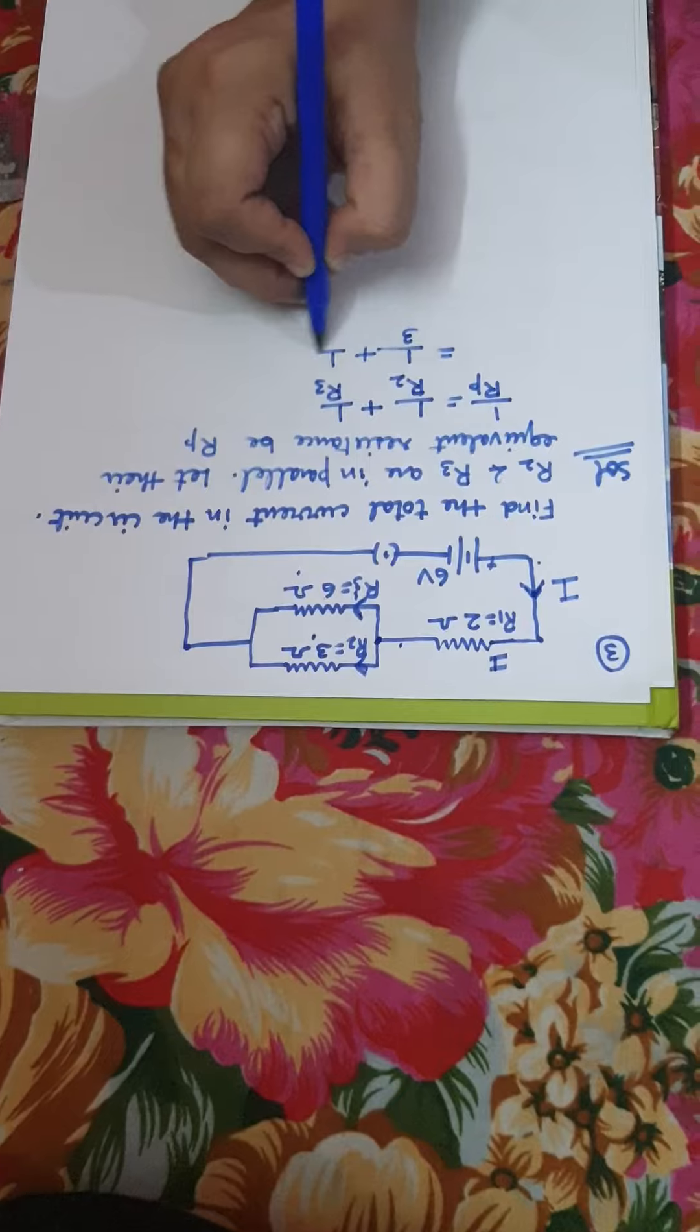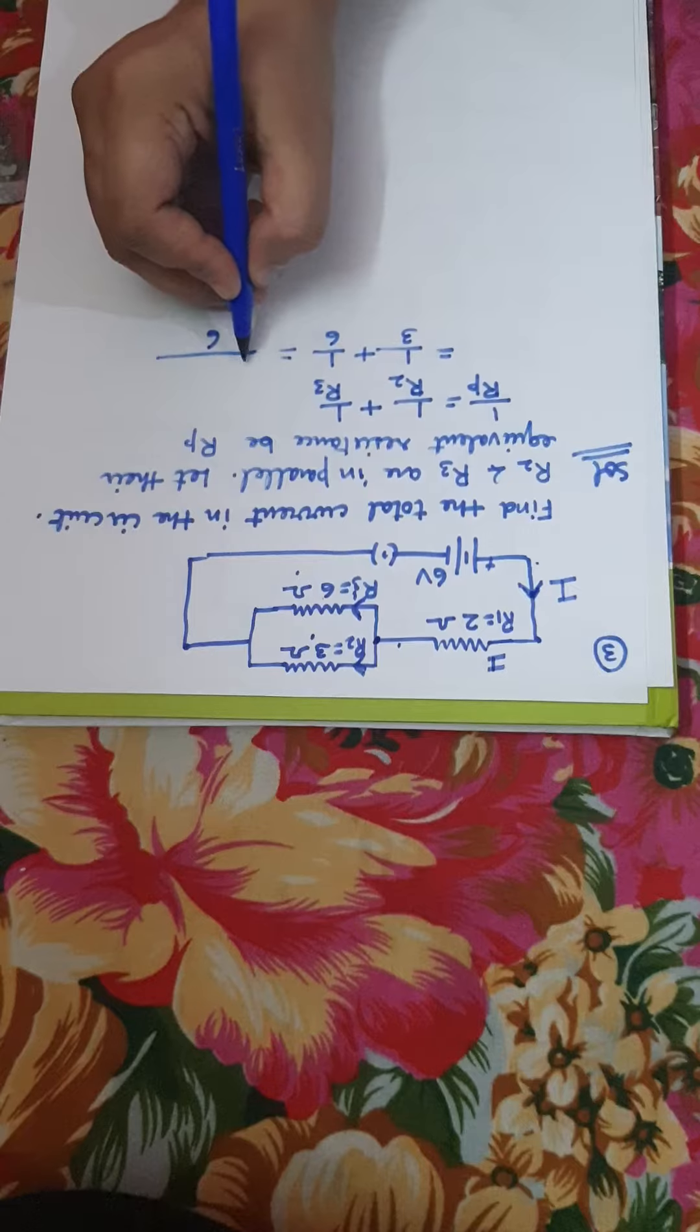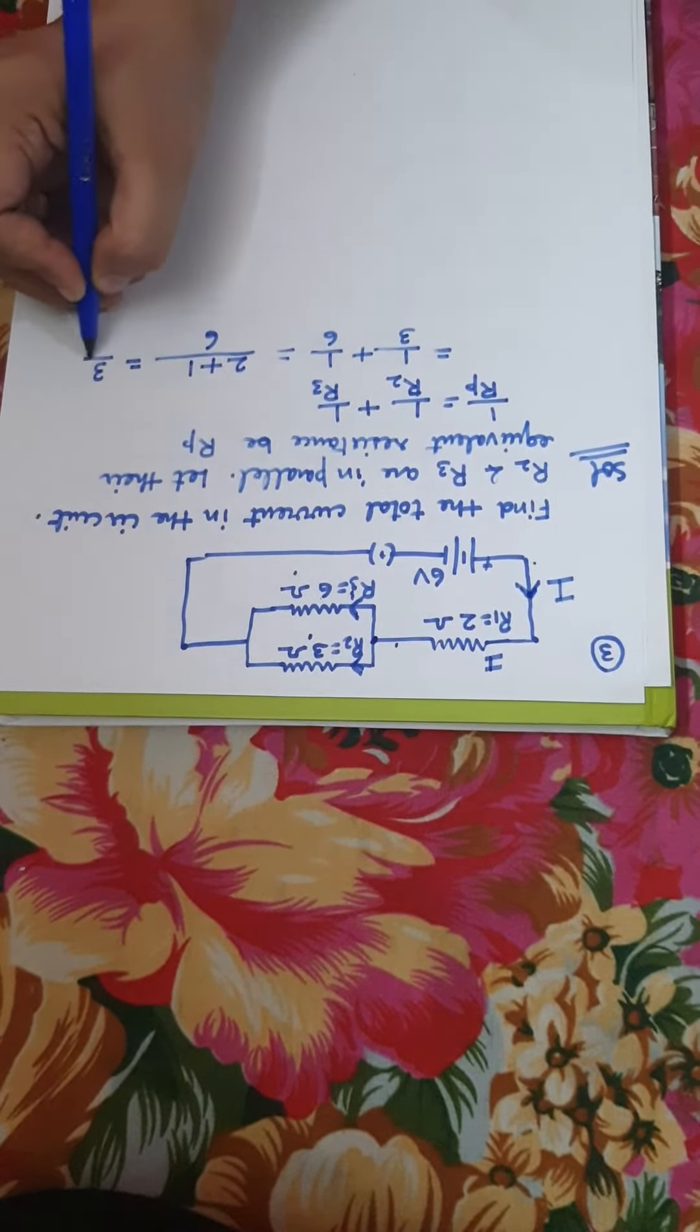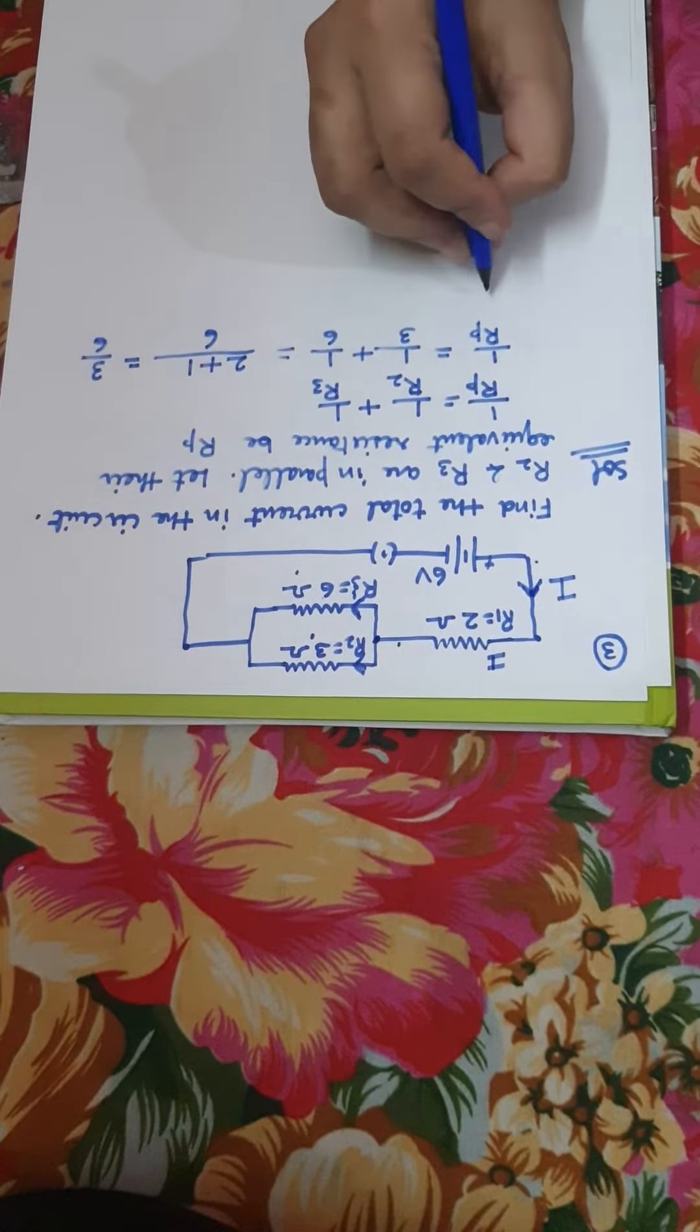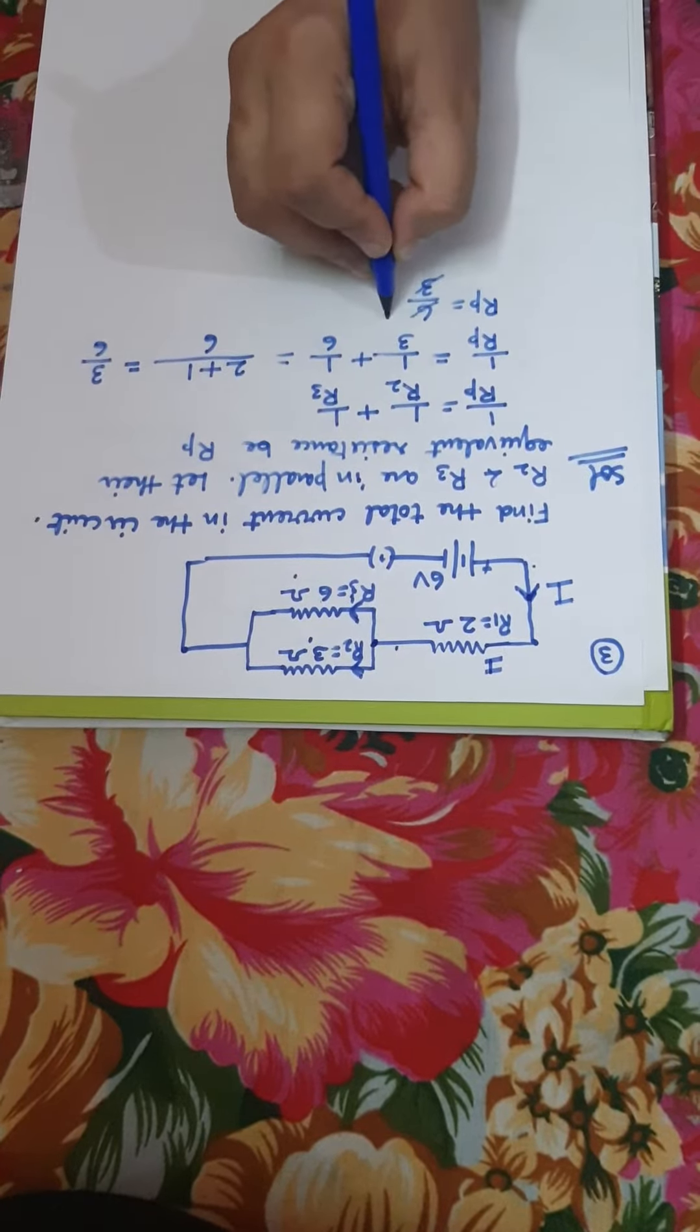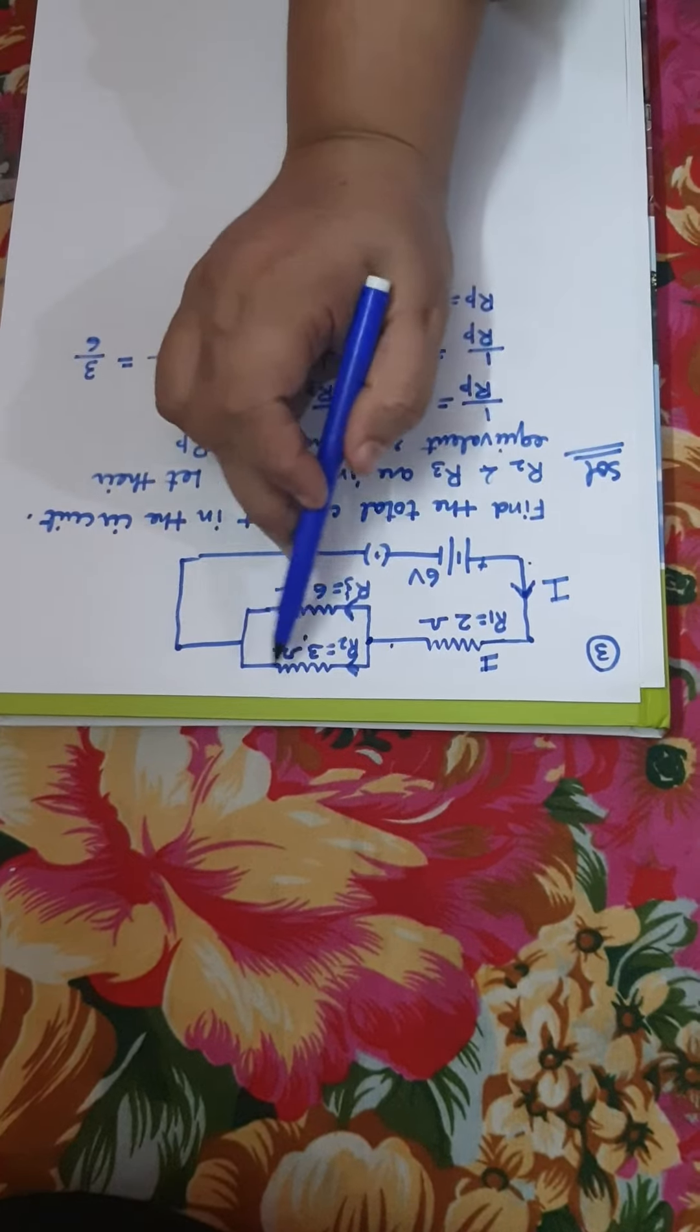Take the LCM of 3 and 6, the LCM will be 6. 3 times 2 is 6 plus 1, so it will be 3 by 6 and it will be 1 by Rp. So Rp will be equal to 6 by 3 and it will be 2 ohm. So the value of their parallel combination will be Rp.